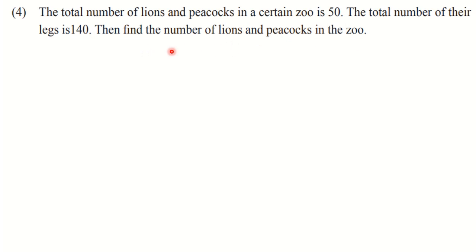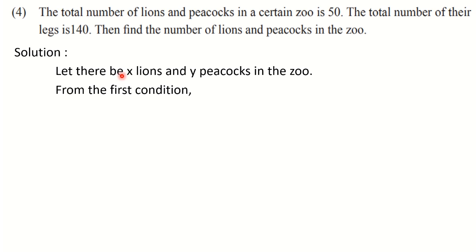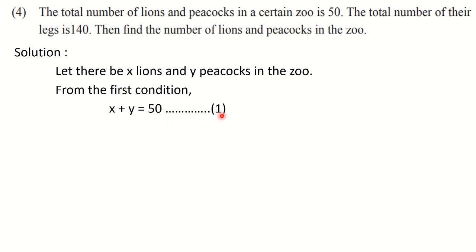We will assign variable X to the number of lions and variable Y to the number of peacocks. Let the number of lions be X and the number of peacocks be Y. Or: let there be X lions and Y peacocks in the zoo. From the first condition, the total number of lions and peacocks is 50, so X + Y = 50. This is equation 1.